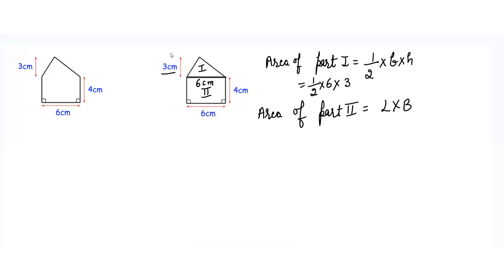So I will multiply 1 into 6, 6 into 3 is 18. So 18 by 2 — when I divide 18 with 2, I will get 9. So the area of the triangle is 9 cm square. The second part is a rectangle and the area of a rectangle is always length into breadth or width. So we will multiply 6 with 4 because 6 is the length and 4 is the width or breadth. So we will get 24 cm square.